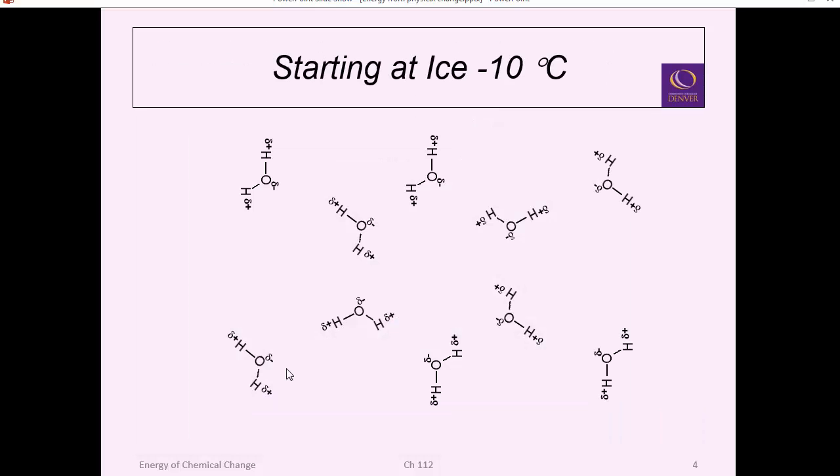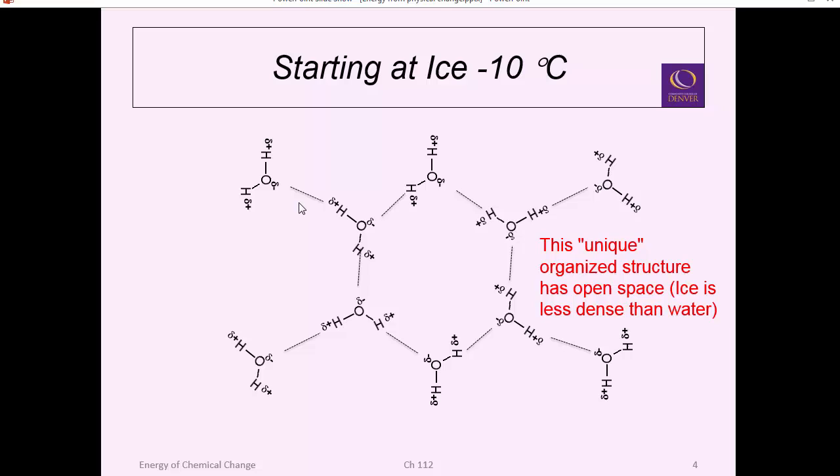Let's explain physical change, starting with ice at minus 10 degrees C. Ice is all these polar water molecules that align and are bound with intermolecular bonds. These are hydrogen bonds that connect the hydrogen bond acceptor, the H+, and the hydrogen bond donator is the lone pair of electrons from the oxygen. So there's a weak intermolecular force between all these waters. This is what makes ice. It's a unique organized structure with a lot of open space. All these strong hydrogen bonds form, and it's less dense than water.